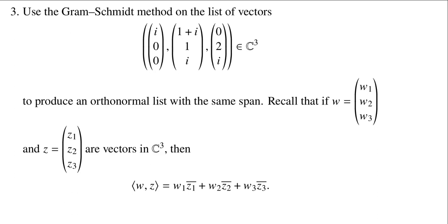In this problem, we are going to use the Gram-Schmidt method, actually the modified Gram-Schmidt method, on a list of vectors in C³ to produce an orthonormal list with the same span. This is a basis for C³.